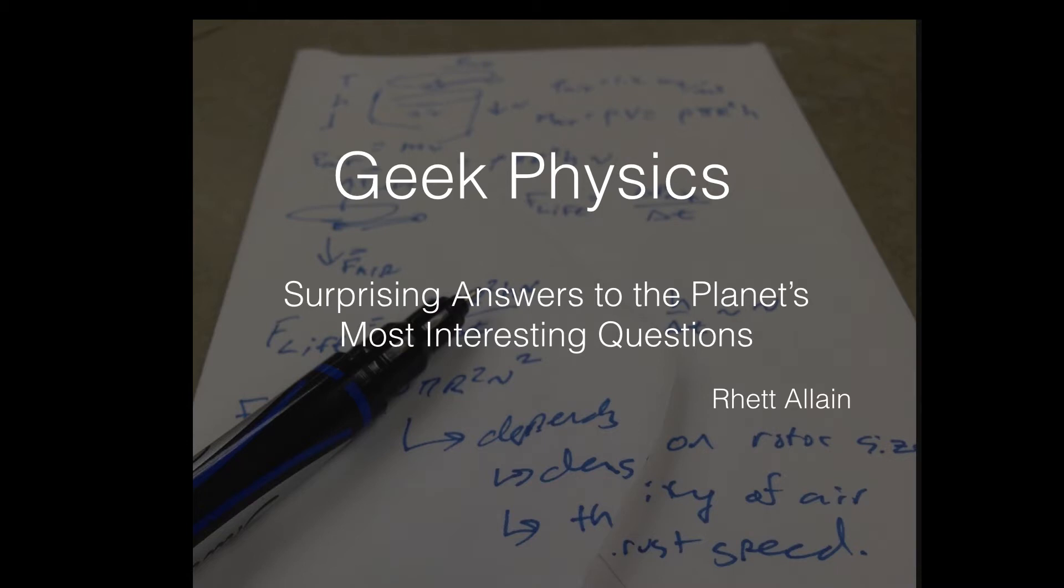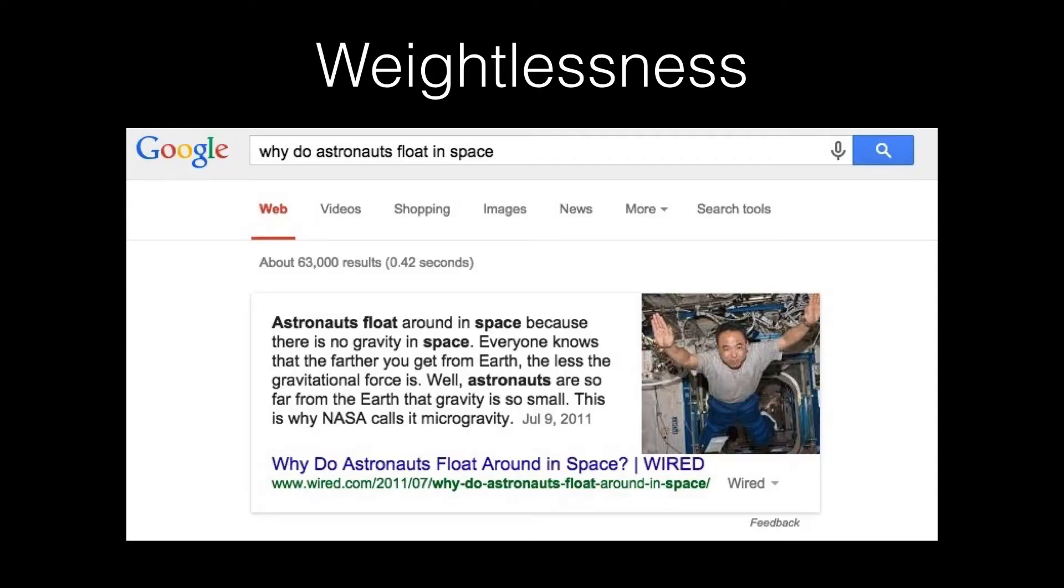So there's the full title. There's my name, that's me. Okay, so the first one, go ahead and try a little test. Open up Google, type in why do astronauts float in space? And you're going to get the following, most likely, the following response: they float around in space because there's no gravity. That's essentially what it says.